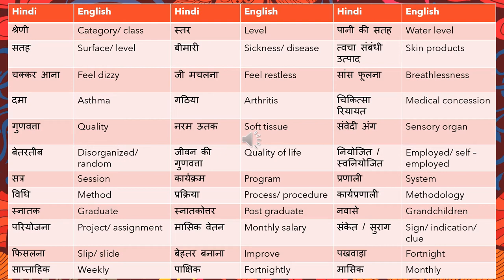Pakhwada means fortnight. Satahik means weekly. Pakshik means fortnightly. Masik means monthly. These words are very important in the context of frequency — for example, when discussing compensation payments or insurance premiums. They may say you have to pay this premium every fortnight: aapko pakshik roop se is premium ko bharna hai. Premium is also called kisht.